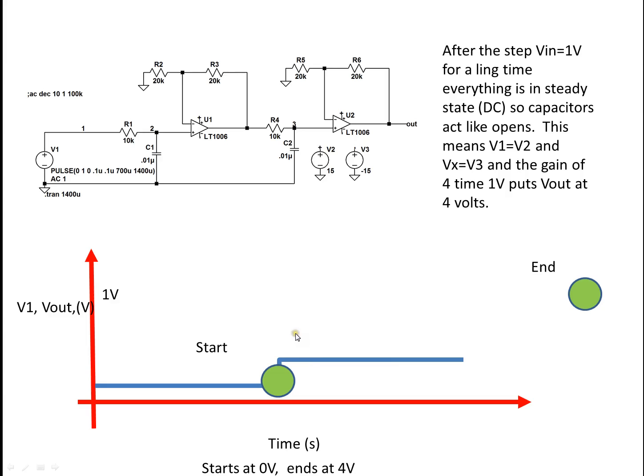Now, what about when we get up to a step of one volt? Well, after a long time, which is a little trickier in a second-order system, these are still open. This will be one volt. That will be one volt. Multiplied by two, you get two. The two volts goes here. Multiplied by two is four. So I know I'm going to start at zero and I know I'm going to end at four.